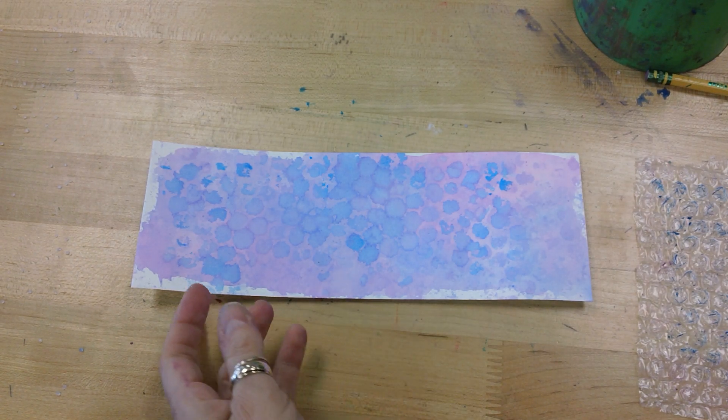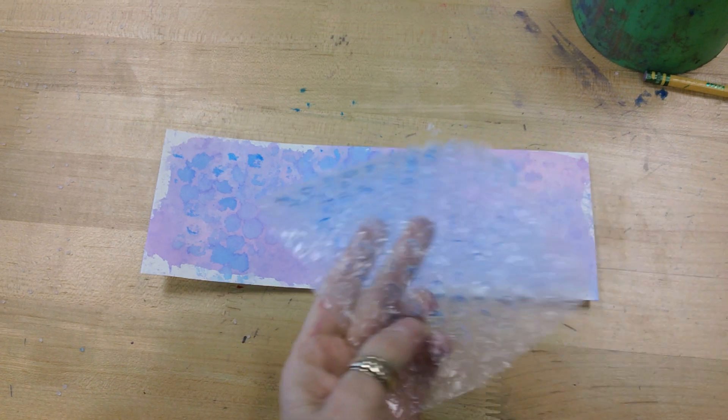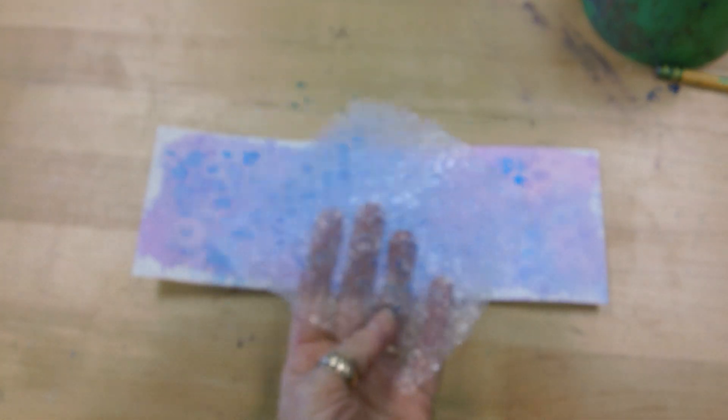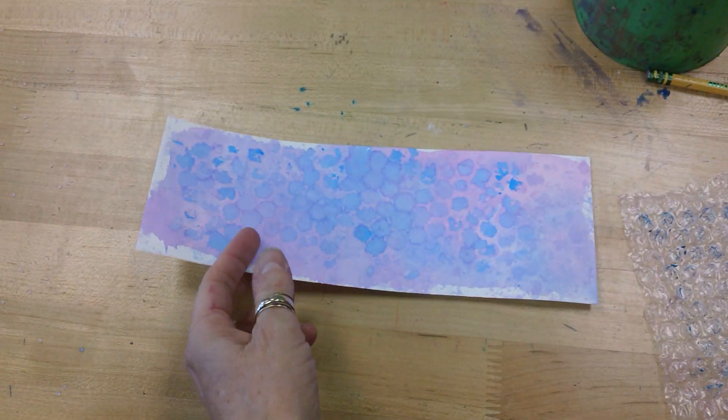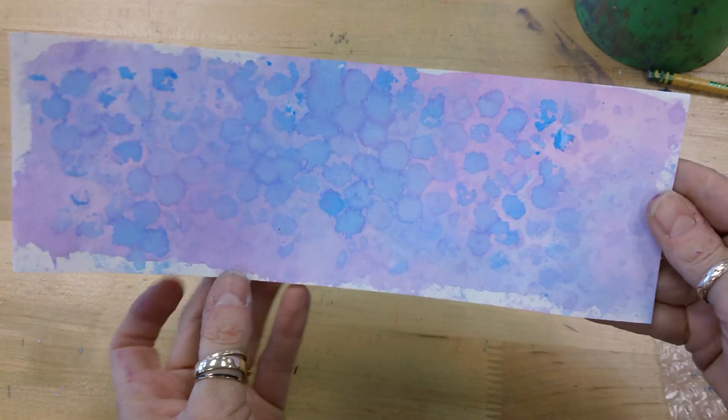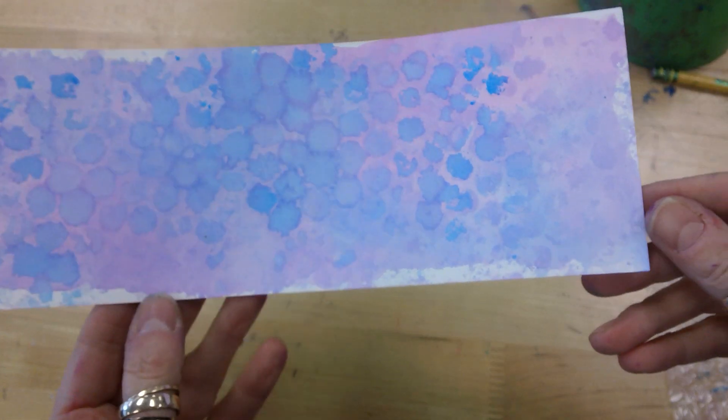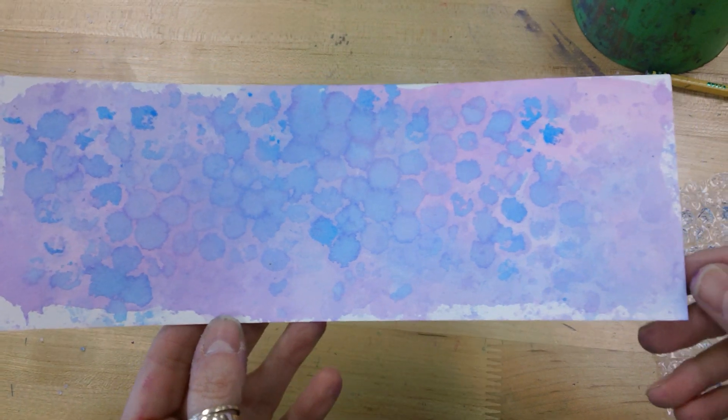For our next watercolor technique, we're going to be using bubble wrap. This technique can be a little tricky, but you can see it leaves a really nice effect on the paper.